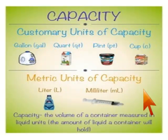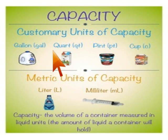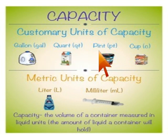When you're measuring capacity, which is the volume of a container measured in liquid units, or the amount of liquid a container will hold, you might see customary units of capacity. These are used most often in the United States. So you might see units like gallon, quart, pint, or cup.